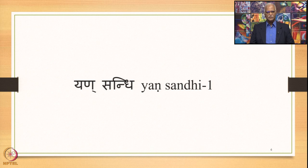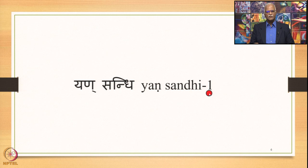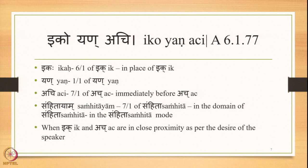Yansandhi is the first type of Ach Ekasthanika Ekadesha Sandhi, and we shall study this type of Sandhi in a few lectures. This is the first lecture on Yansandhi. Here we shall study some basic facts about Yansandhi, the Sutra and its meaning, and the overall data set covered in the Sutra. Then we shall look at the Sutra Ikoyanachi, Sutra 6.177, which describes the Yansandhi.